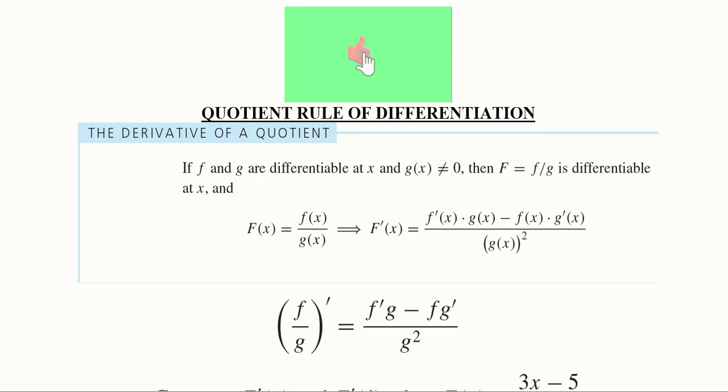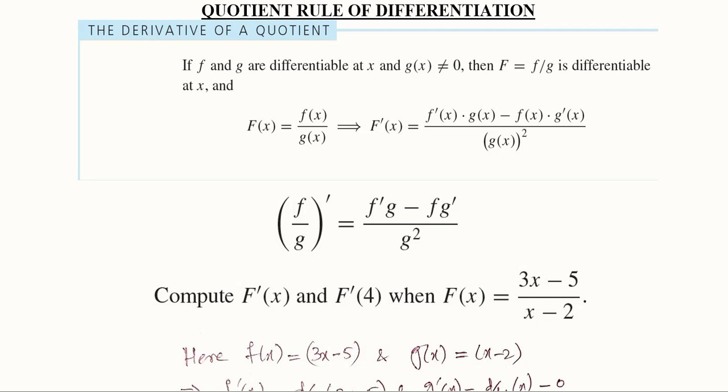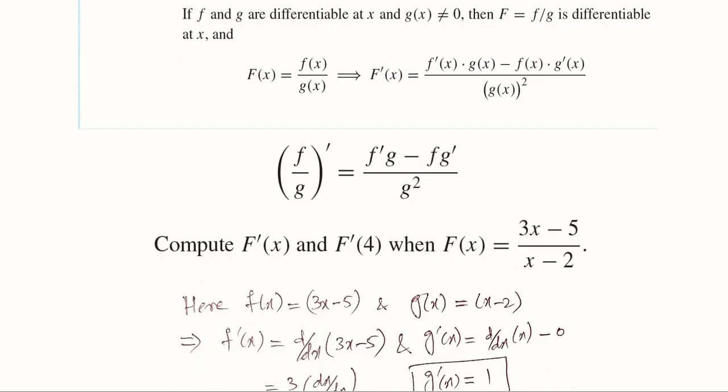Otherwise, the first sub-function is differentiated, the other is kept as it is, and here the second function is differentiated while the first one is kept in its original form, whole divided by g of x whole square. So this is how we will apply the quotient rule. Here, in another form, it is written in a more simplified form.